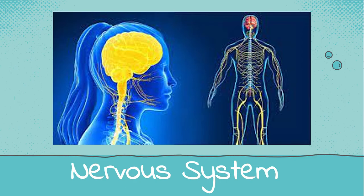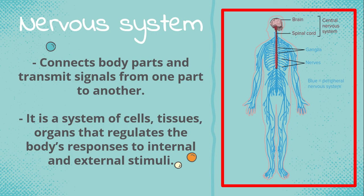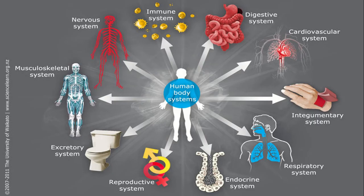So what is the nervous system? The nervous system connects body parts and transmits signals from one part to another. It is a system of cells, tissues, and organs that regulates the body's responses to internal and external stimuli. The nervous system is one part of the 11 body systems in our body.